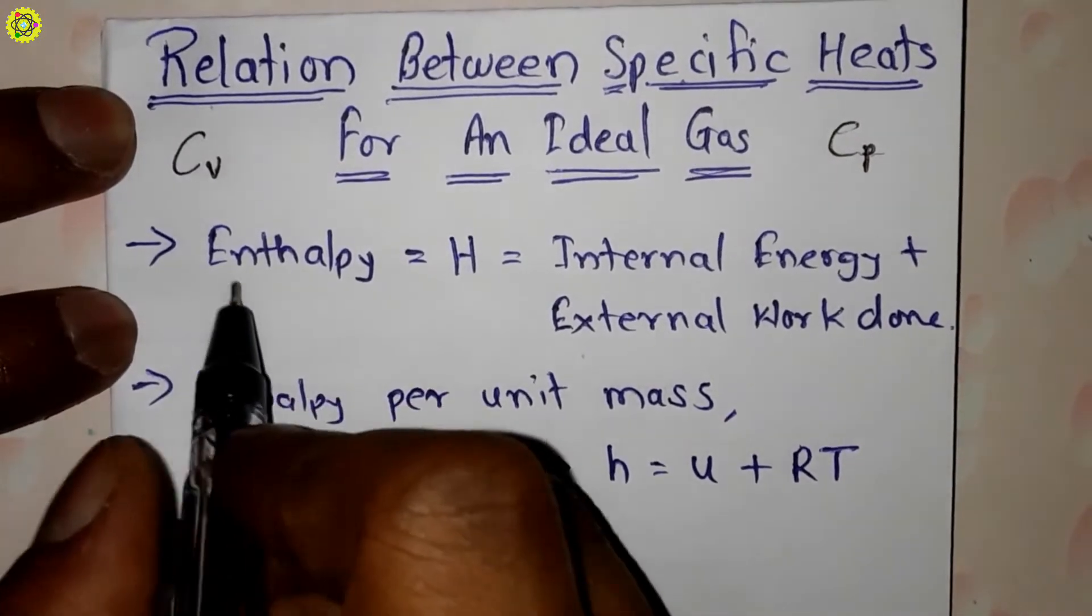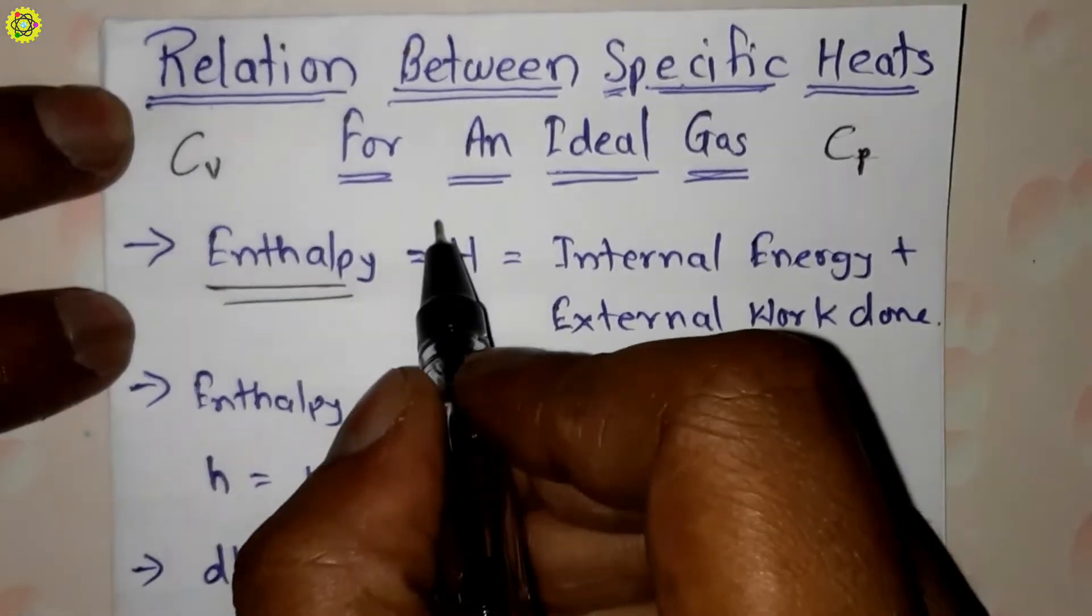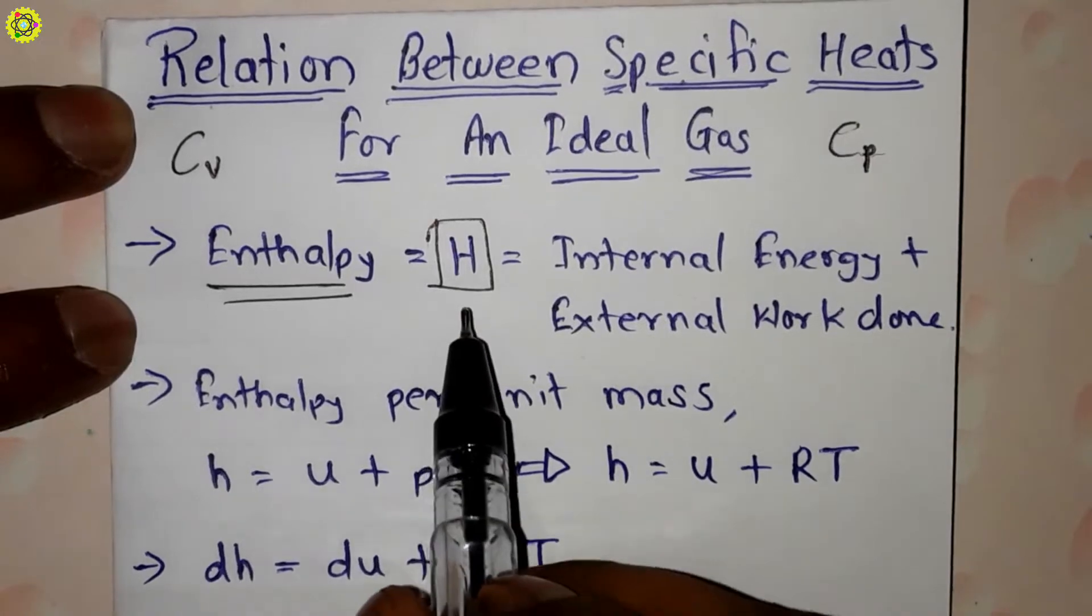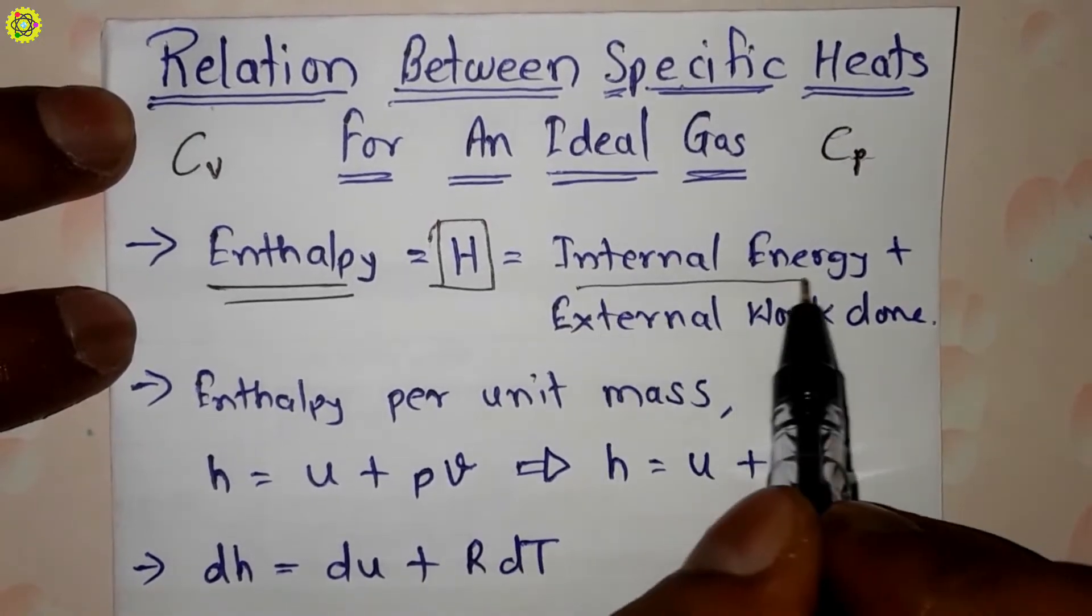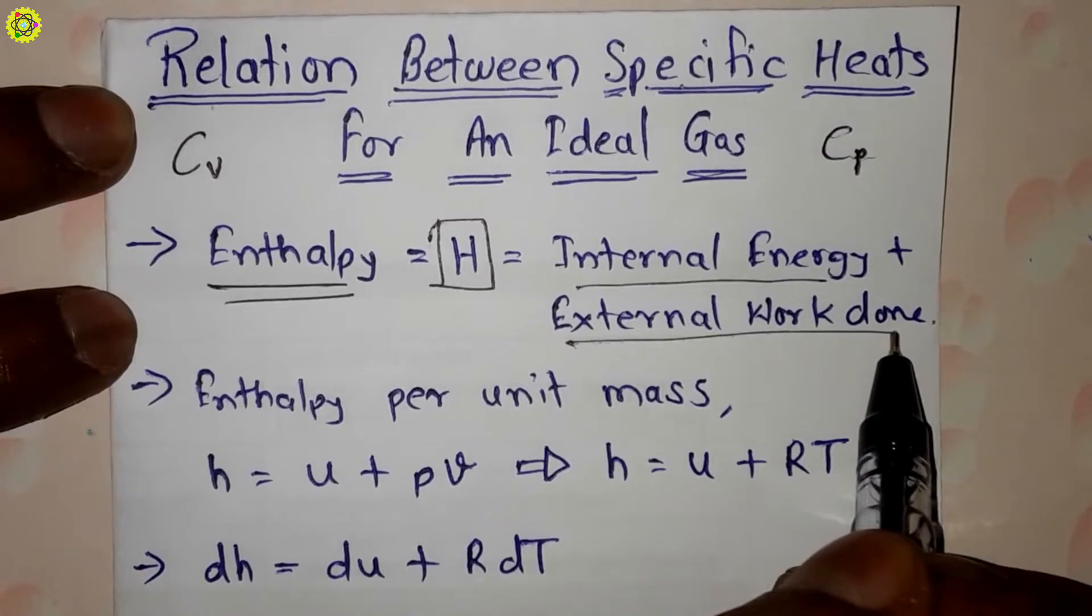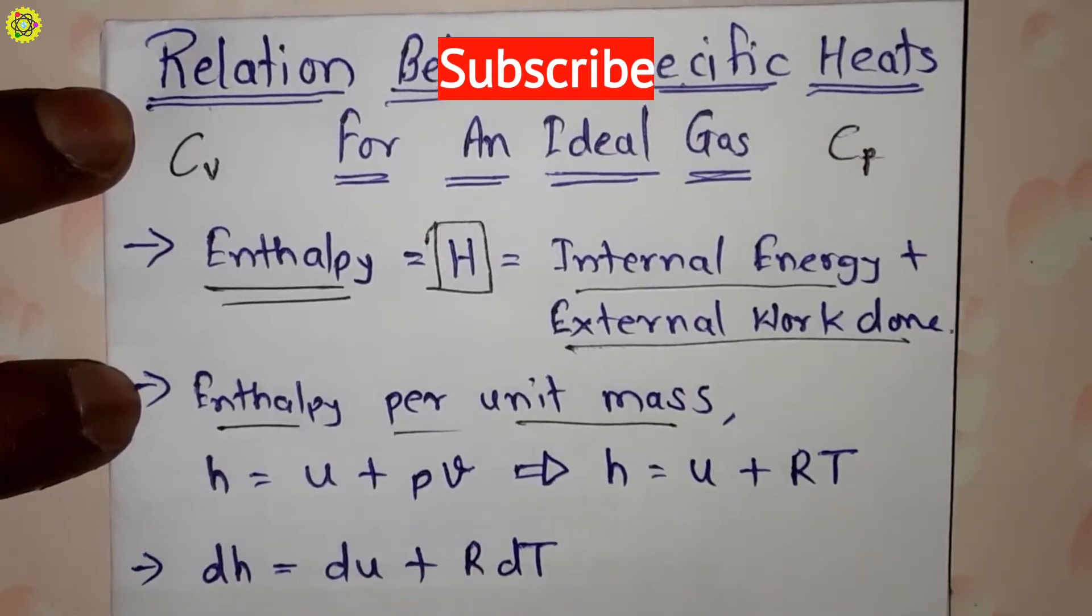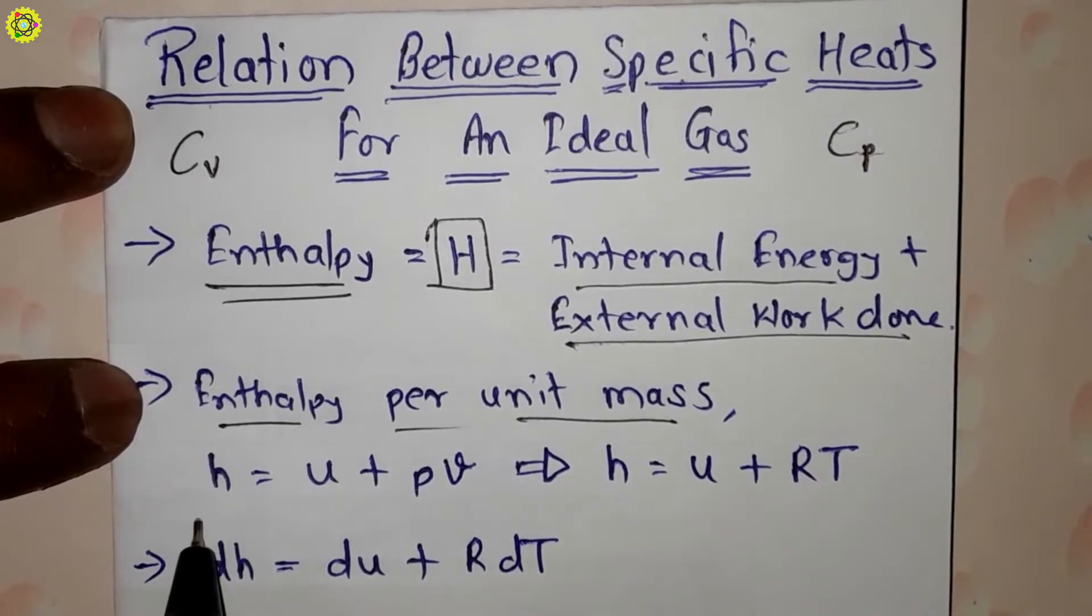First we will see enthalpy, capital H, is given by H equals internal energy plus external work done. Further, enthalpy per unit mass we can write down as small h.